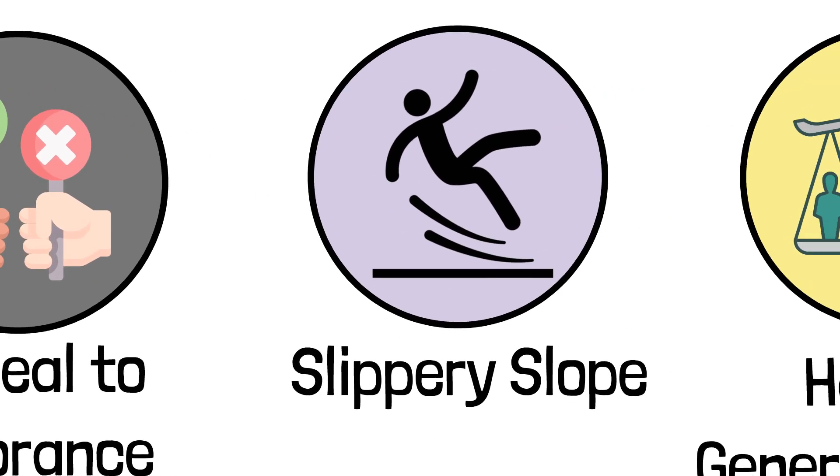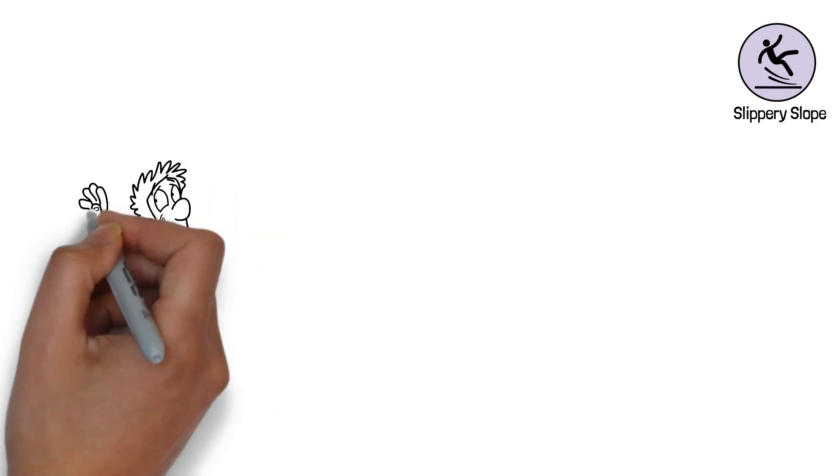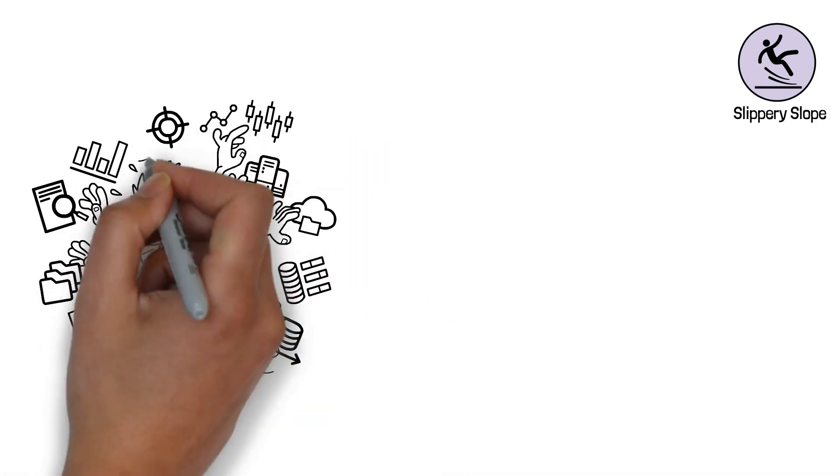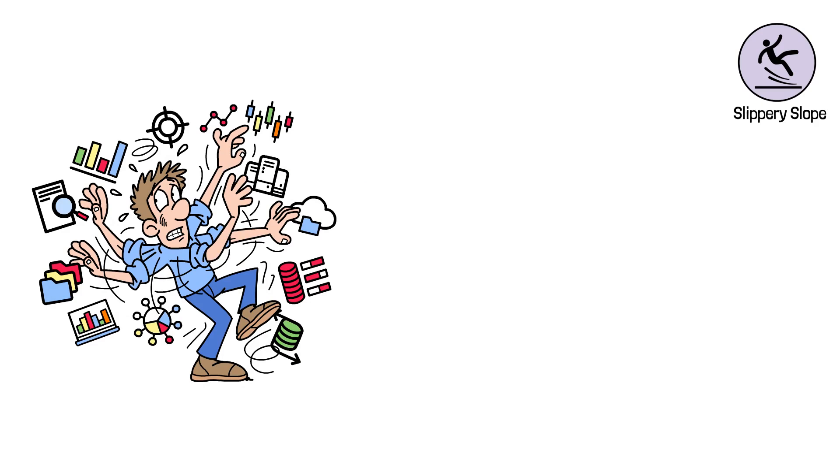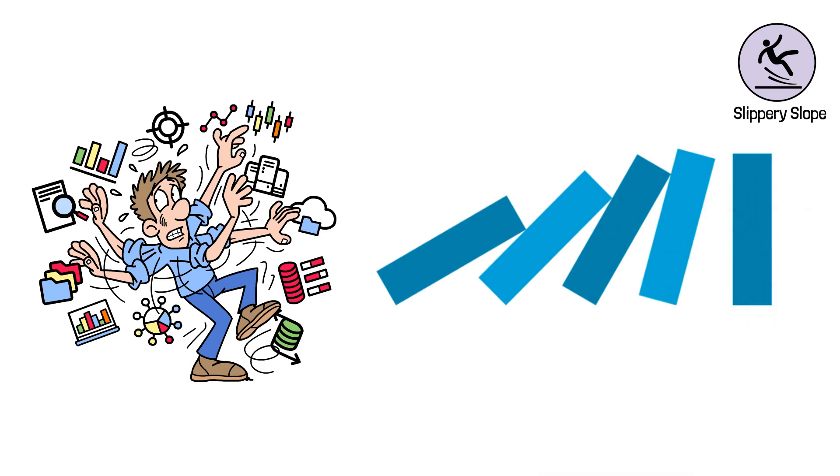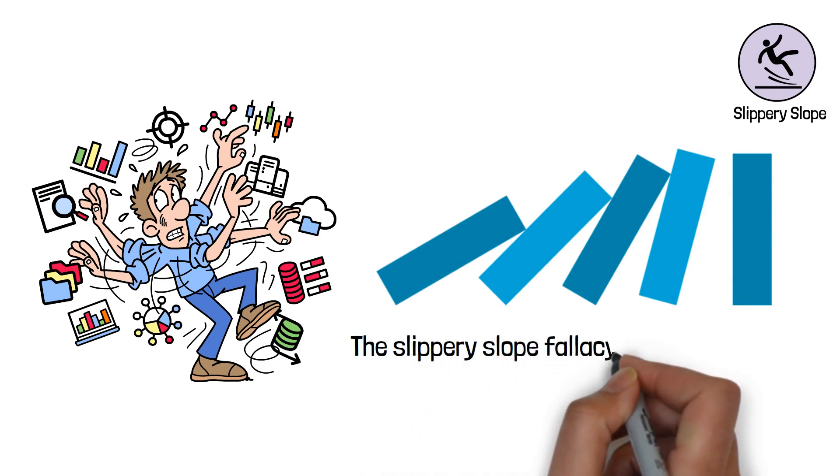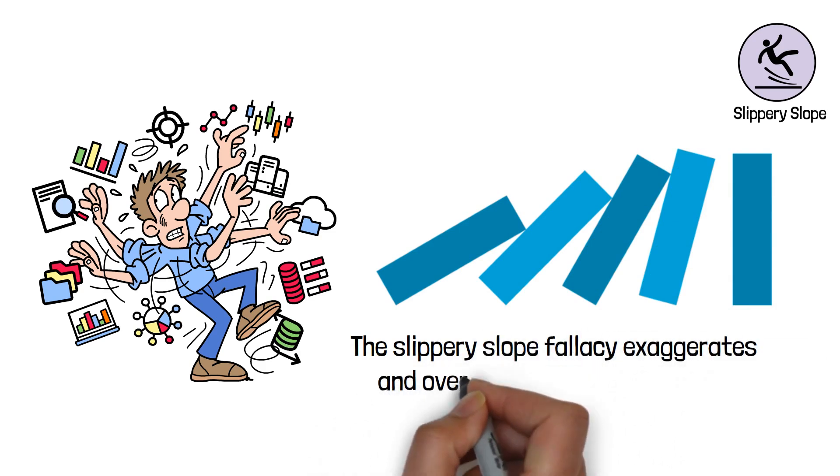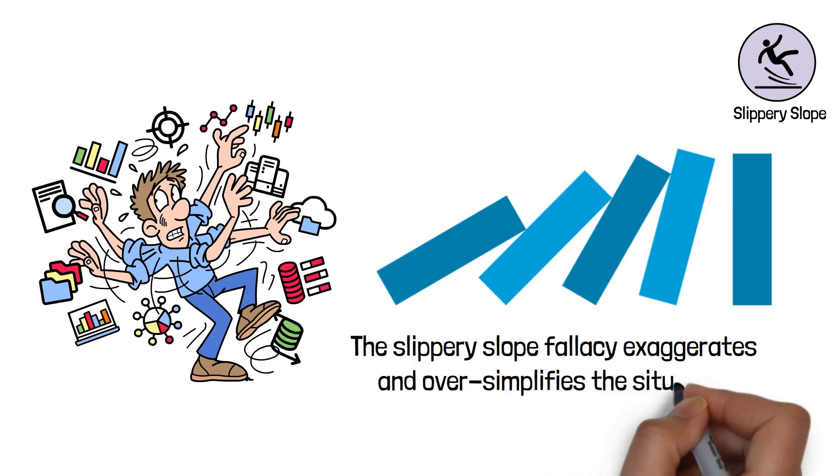7. Slippery Slope. This fallacy involves claiming that one event will inevitably lead to a series of negative events without providing sufficient evidence for the causal link. It assumes a domino effect without considering other factors or the possibility of alternative outcomes. While there can be legitimate concerns about potential consequences, the slippery slope fallacy exaggerates and oversimplifies the situation.